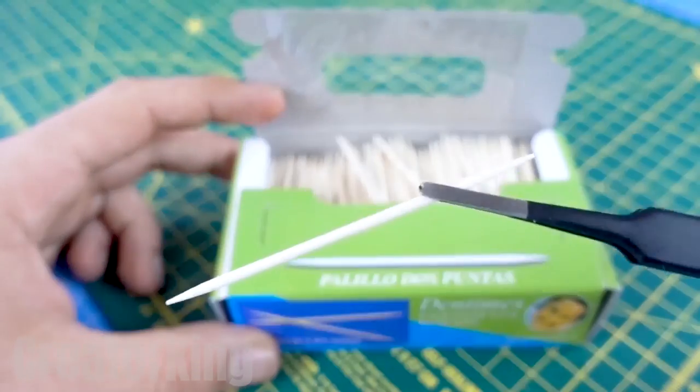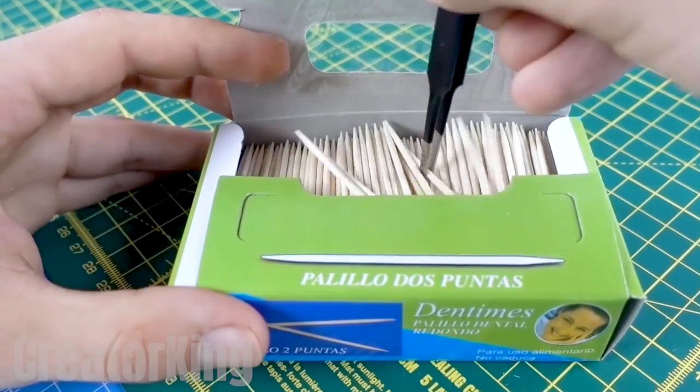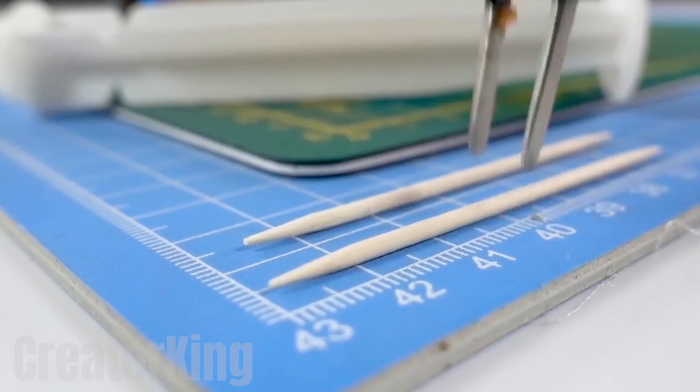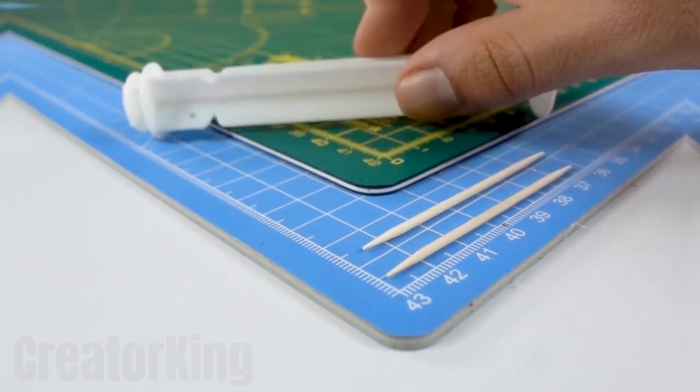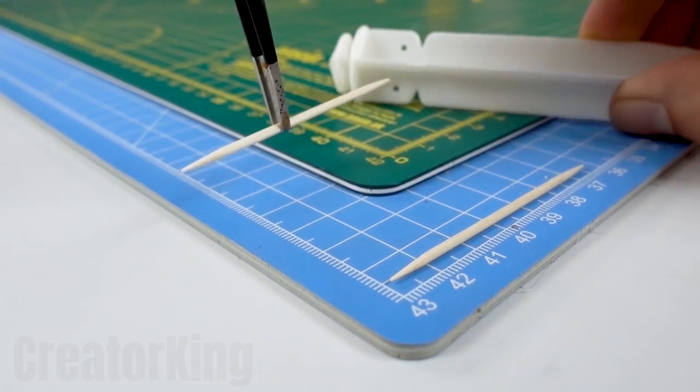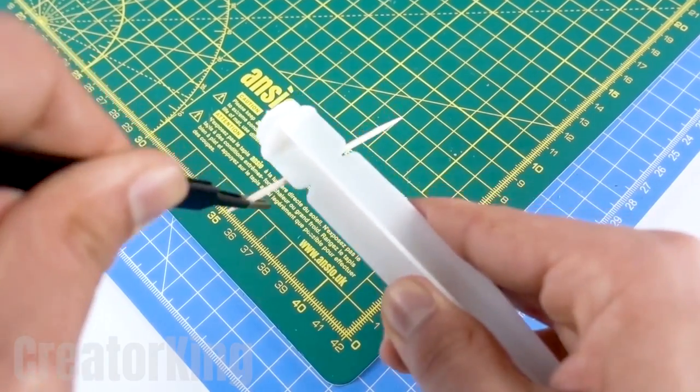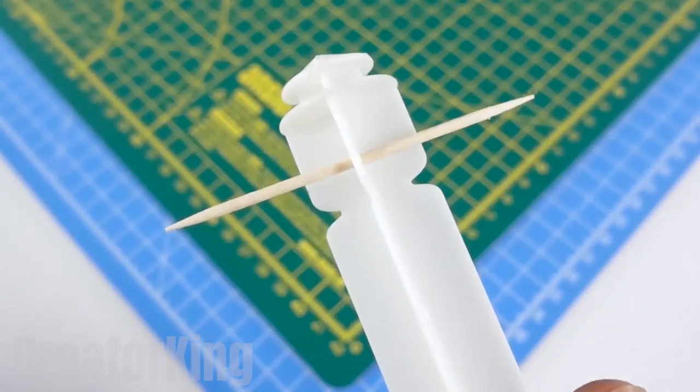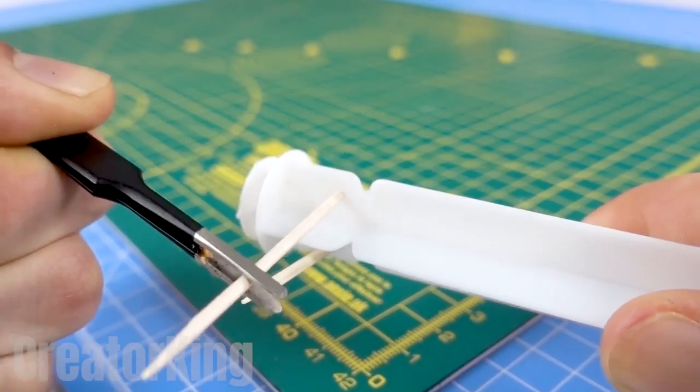For this invention we'll need more than one toothpick, so be sure to keep this box close by. For now just take two of them. Insert both toothpicks into the holes we just made. Apply a little brute force if the toothpick refuses to go in.